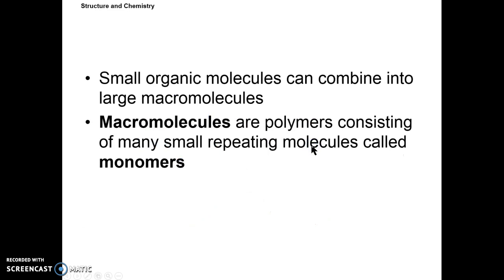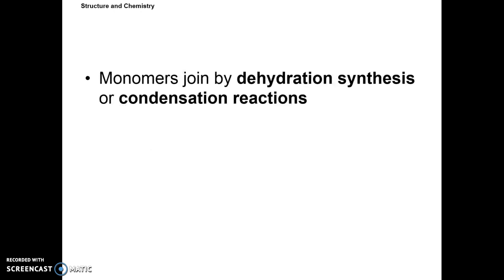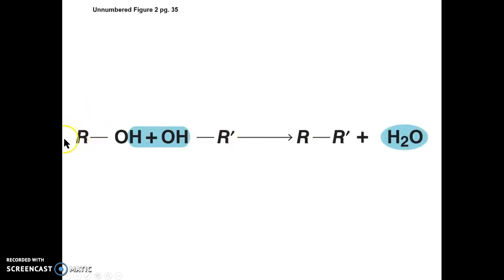So small molecules can combine into large molecules, macromolecules or polymers consisting of many small repeating molecules called monomers. Monomers join by dehydration synthesis or condensation depending on how it's being joined. So this R represents some carbon chain over here. This R represents some carbon chain. Notice they have two hydroxyls. Now if the temperature or enzymes are just right, what ends up happening is you create water. And these two join to form some type of polymer or monomer.